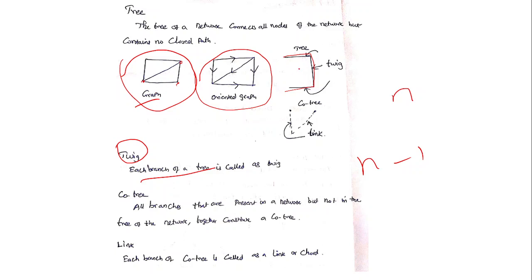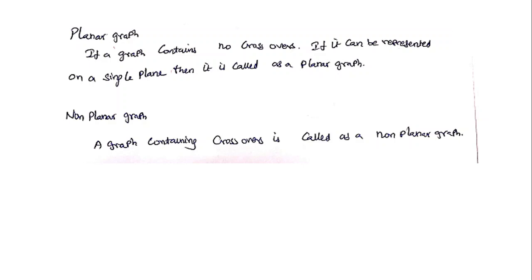Now I need to compare the graph and the tree. In the graph, some portions of the line segments are not drawn in the tree — I call that the cotree. The branches not included in the tree are called the cotree. The branch of the cotree I call a link — another name is chord. All the branches present in a network but not in the tree together constitute the cotree.